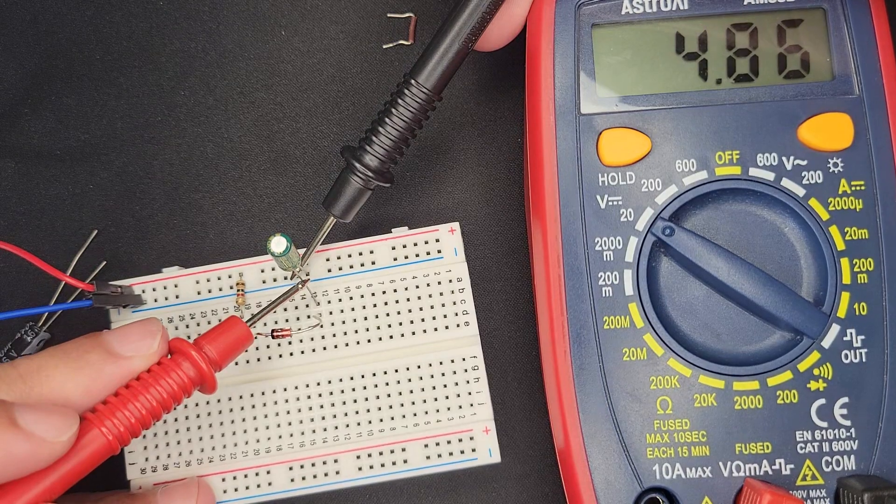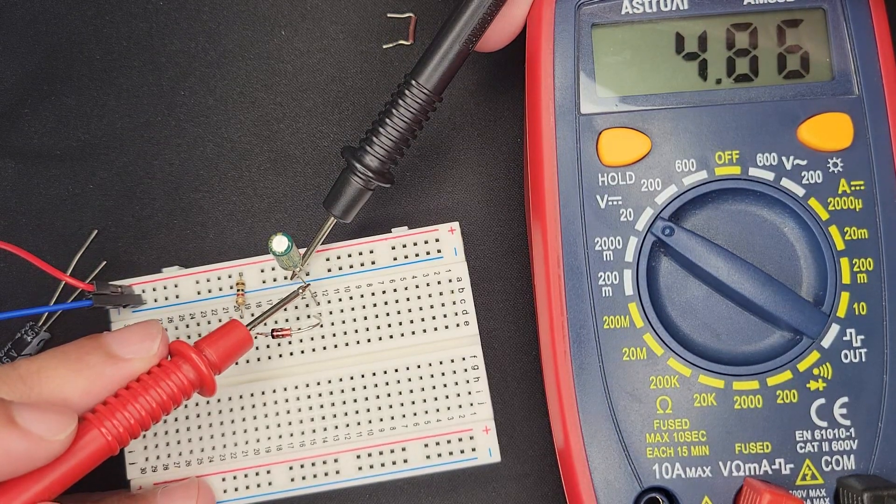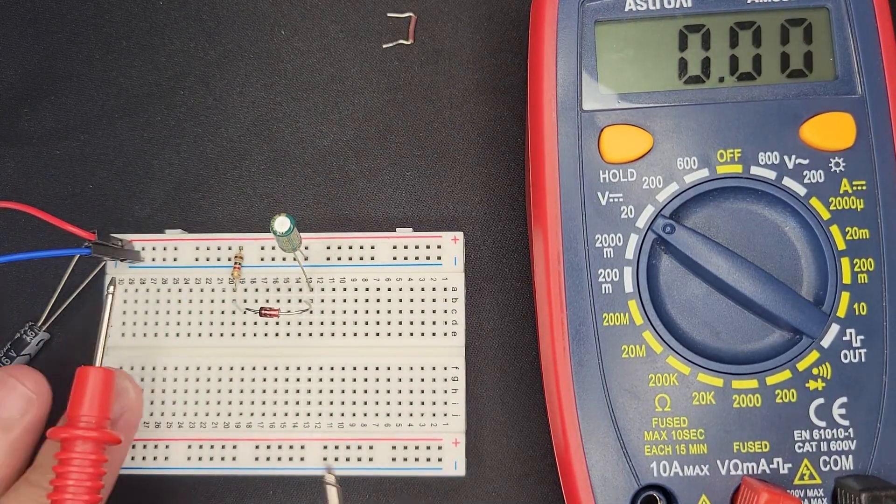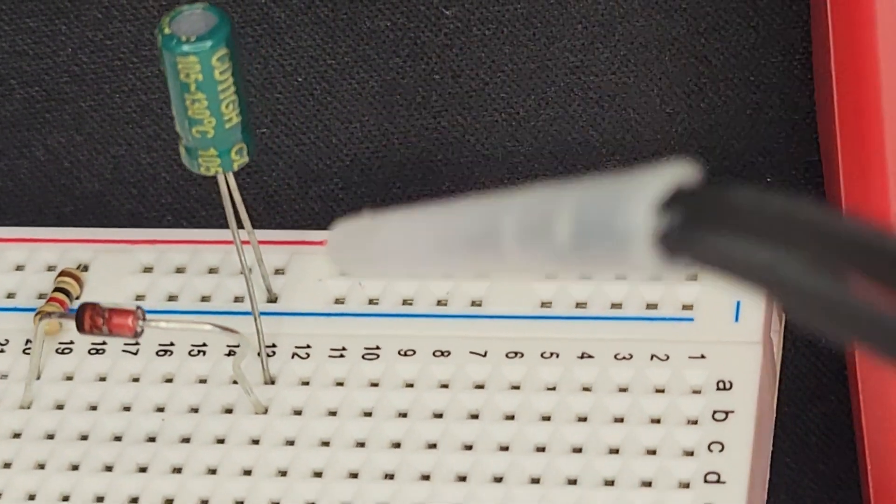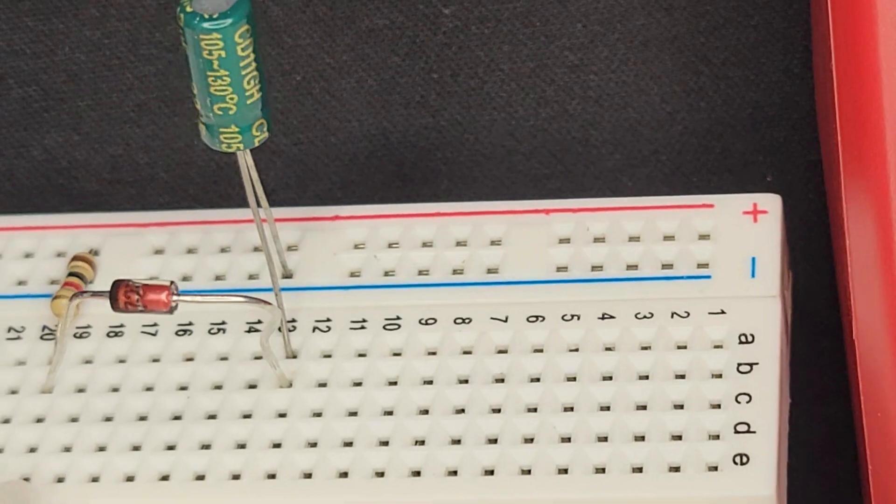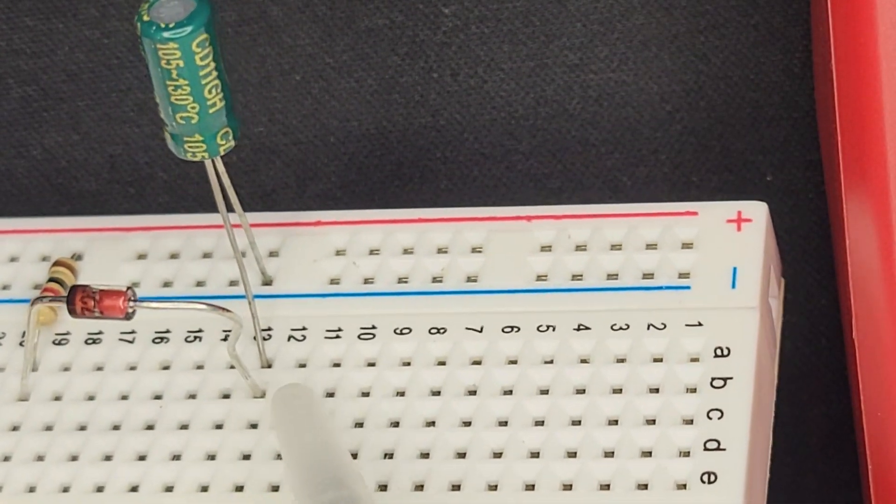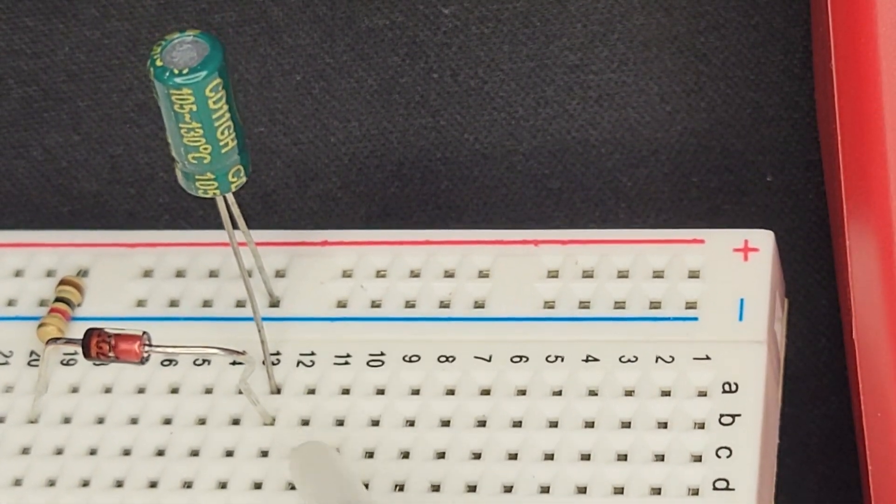But I was expecting the capacitor to only reach 3 volts because the idea is that at this point, at this position, the voltage should have been regulated down to 3 volts here. So there's something I'm not understanding.